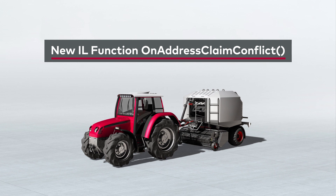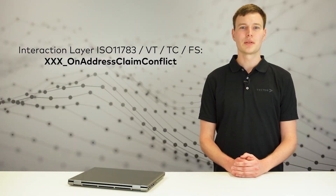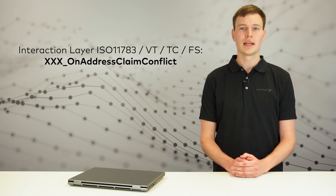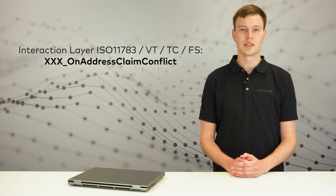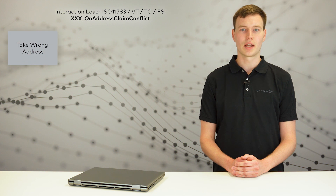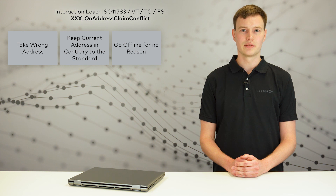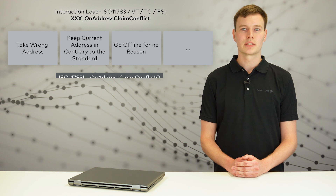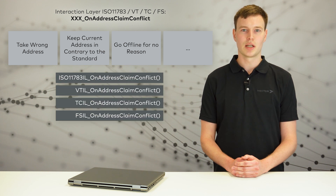The new Couple Callback function on Address Claim Conflict can be used to analyze the behavior of the simulated node in the case of address conflicts on the bus and to influence it as desired. It is very easy to make the behavior conform to the standard as well as to introduce arbitrary deviations from it. For example, in case of an address conflict, the simulated node can take a wrong address, keep its current address contrary to the standard, or go offline for no reason. On Address Claim Conflict is of course available in all ISOBUS simulation libraries.